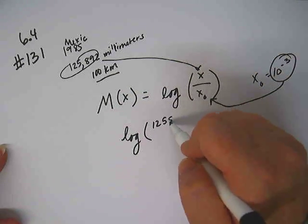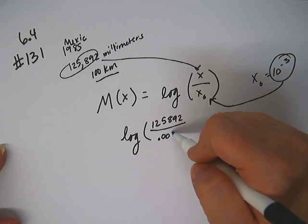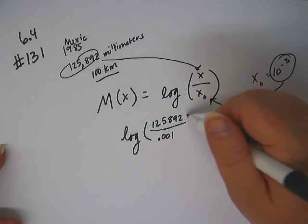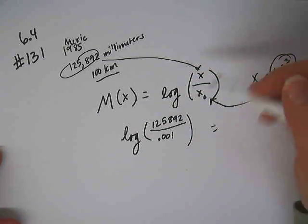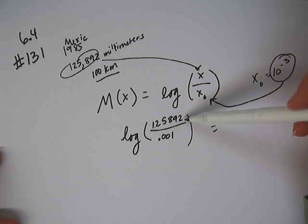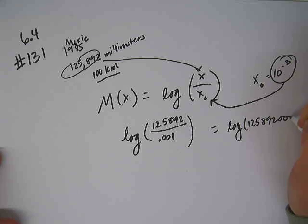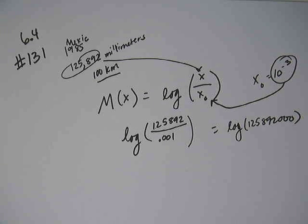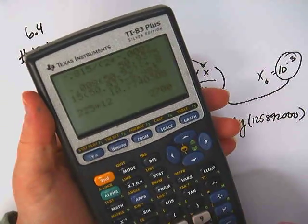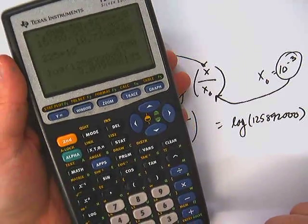So we compute the common log base 10 of 125,892 divided by 10 to the negative 3. If you remember your scientific notation, dividing by 10 to the negative 3 adds three more zeros, so you're actually doing the logarithm of 125,892,000. Then we use a calculator to do the problem: log of 125,892.